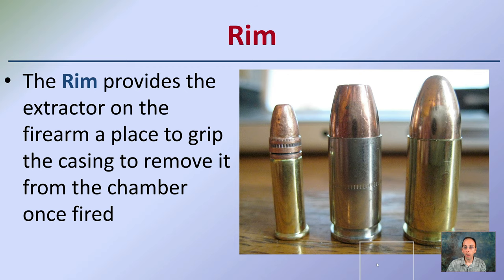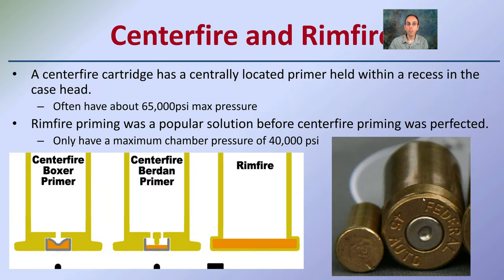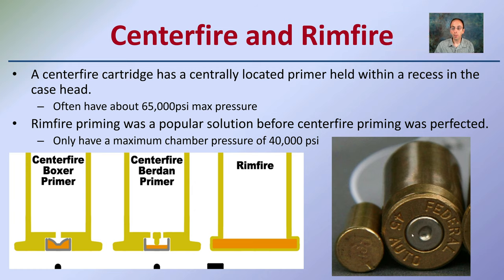The rim — that lower portion at the very base — provides the firearm's extractor a place to grip the casing and remove it from the chamber. You can see different rims here with different calibers, but they all serve the same purpose. Centerfire and rimfire are two different types. A centerfire cartridge, as the name implies, has a centrally located primer held within the recess of the case head, with a max pressure of about 65,000 psi. Rimfire priming was a popular solution before centerfire was perfected; rimfire has a maximum chamber pressure of about 40,000 psi — a little less powerful, but rimfire rounds are still used today.